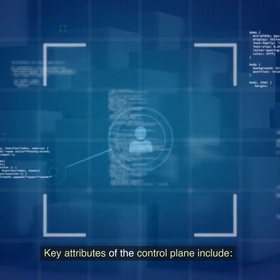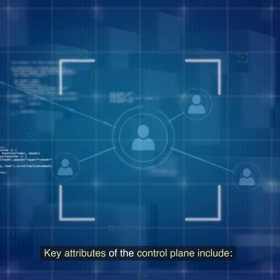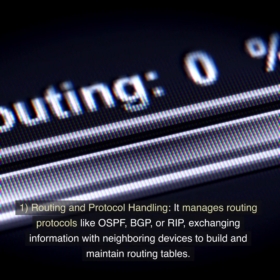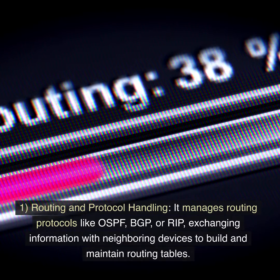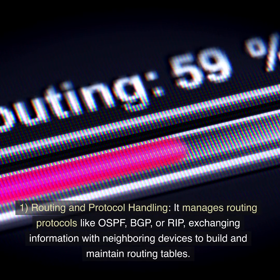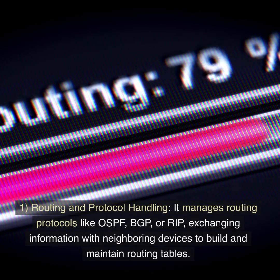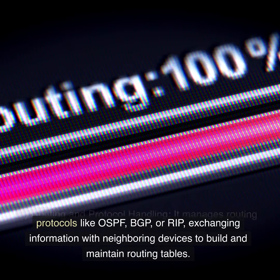Key attributes of the control plane include: 1. Routing and protocol handling. It manages routing protocols like OSPF, BGP, or RIP, exchanging information with neighboring devices to build and maintain routing tables.